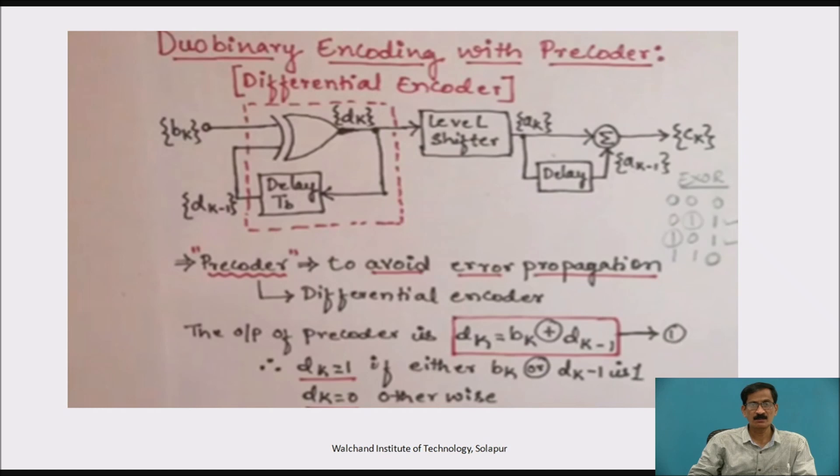So, as it has been explained, the precoder at the receiver side is used to avoid error propagation which is a differential amplifier. I have discussed about the XOR gate function and delay unit which is shown in the dotted rectangular block. The output of which is d k of the XOR gate is given to a level shifter. The level shifter output is a k which is in the form of plus 1 and minus 1. So, the level shifter converts the input signal into a binary form into bipolar format that is plus 1. If d k is 1, output of level shifter a k is 1. If d k is 0, output is minus 1.